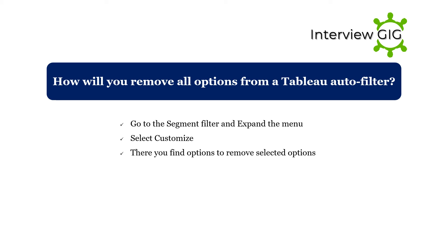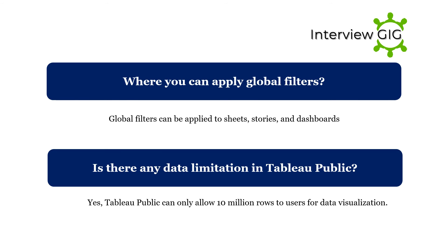How will you remove all options from a Tableau autofilter? Go to the segment filter and expand the menu. Select 'Customize' — there you find options to remove selected options. Where can you apply global filters? Global filters can be applied to sheets, stories, and dashboards.